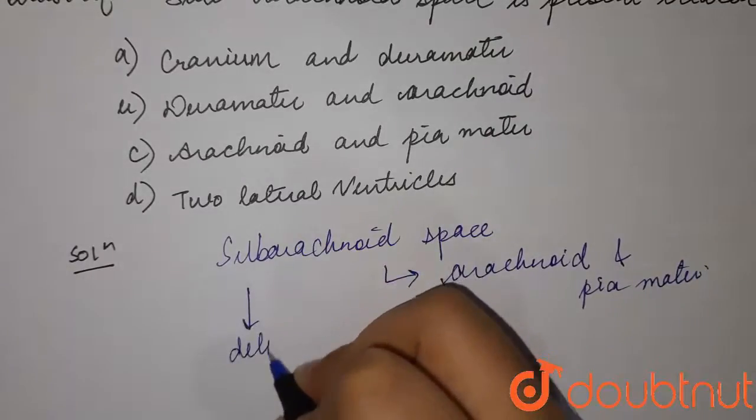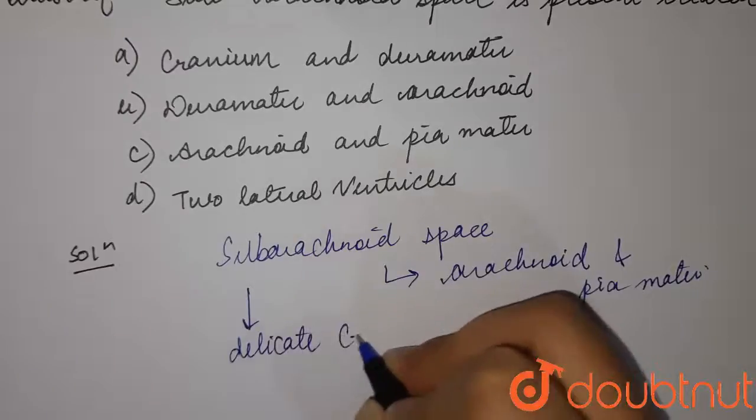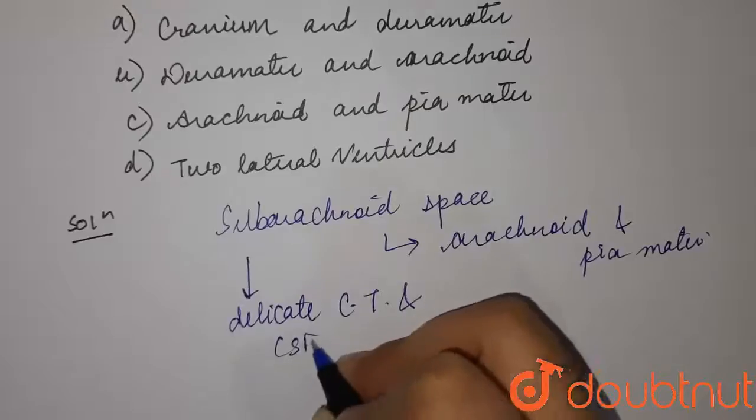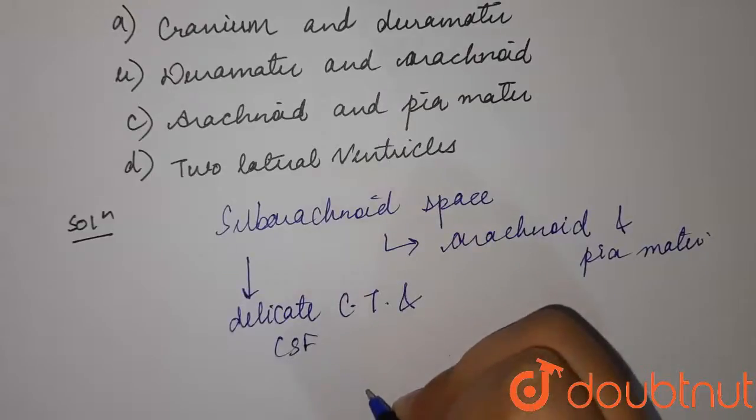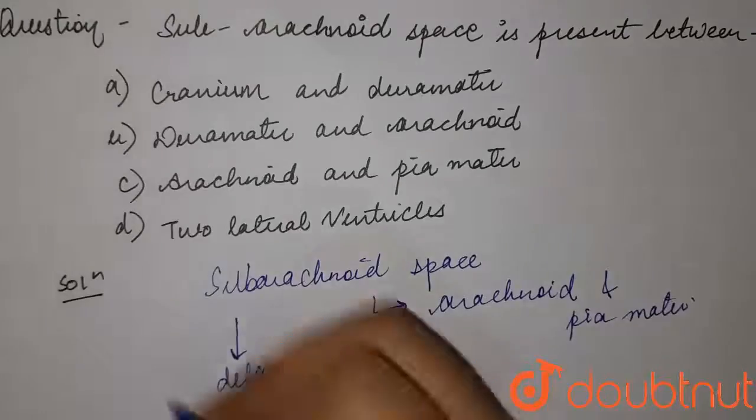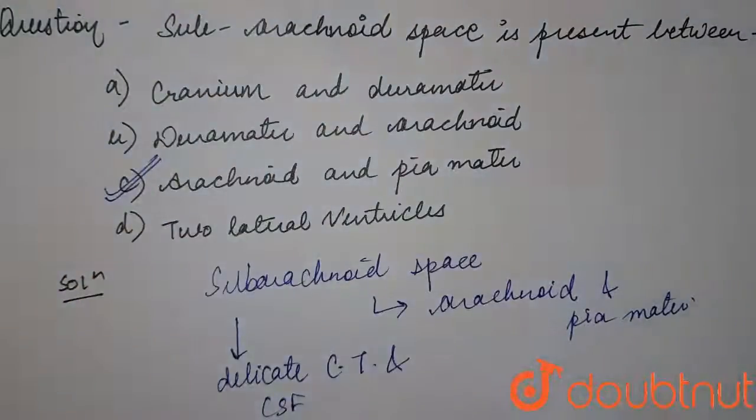So they have this delicate connective tissue and CSF, which is cerebrospinal fluid, as well as the branches of the arteries and veins of the brain. So our answer to the question would be option C: arachnoid and pyameter. Thank you.